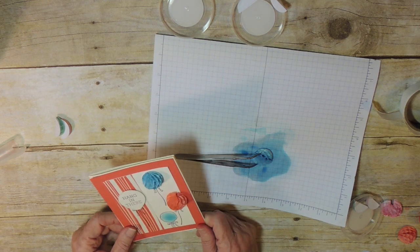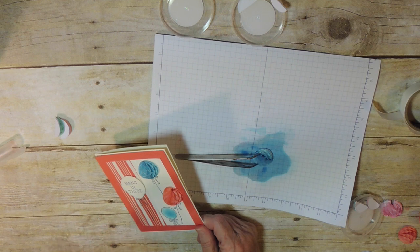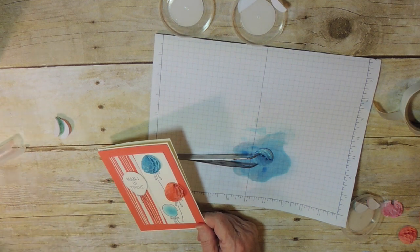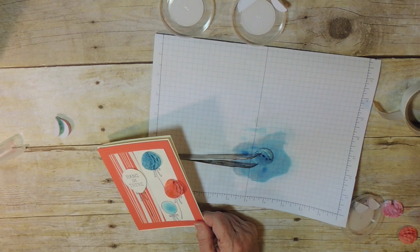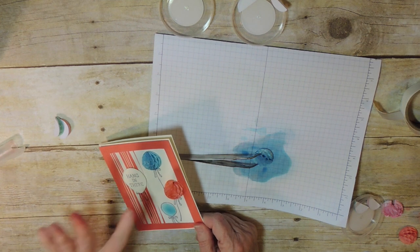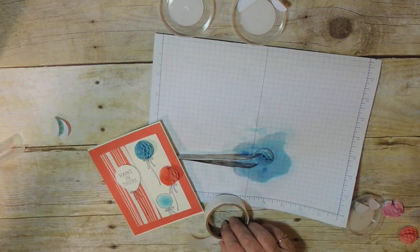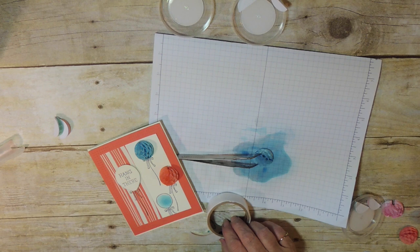So if you would like to try this, you're going to get spritzers, at least one. They're on page 163 in our annual catalog. You need, obviously, the honeycomb embellishments. They're from the occasions catalog. You need glue dots. You need our heat tool, Stampin' Up heat tool.